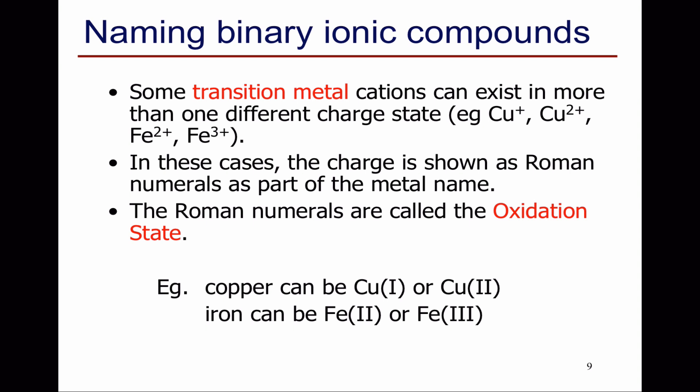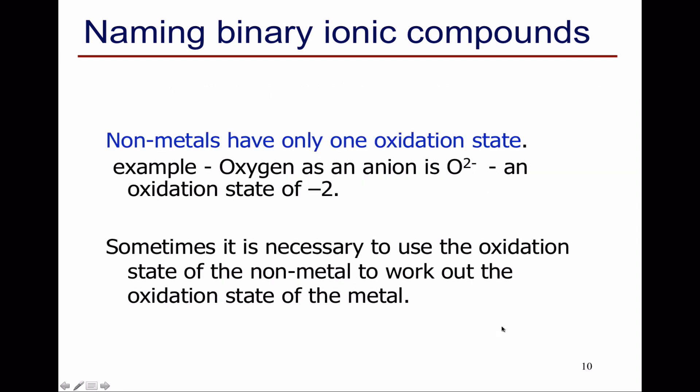We know this because we add a Roman numeral as part of the metal's name. The Roman numeral is called the oxidation state. For example, copper+ will be written as copper(I), copper2+ will be written as copper(II). And iron can be 2+ or 3+, and this is written as iron with a II or a III in Roman numerals after its name. Non-metals usually only have one oxidation state. So we'll always know that we've got oxygen as O2-. Sometimes it's necessary to use the oxidation state of the non-metal to work out just what the oxidation state of the metal is.